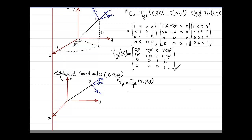The first operation is a translatory motion in the Z direction. There is nothing in X, nothing in Y; in the Z direction it is going to be r. This is pre-multiplied.